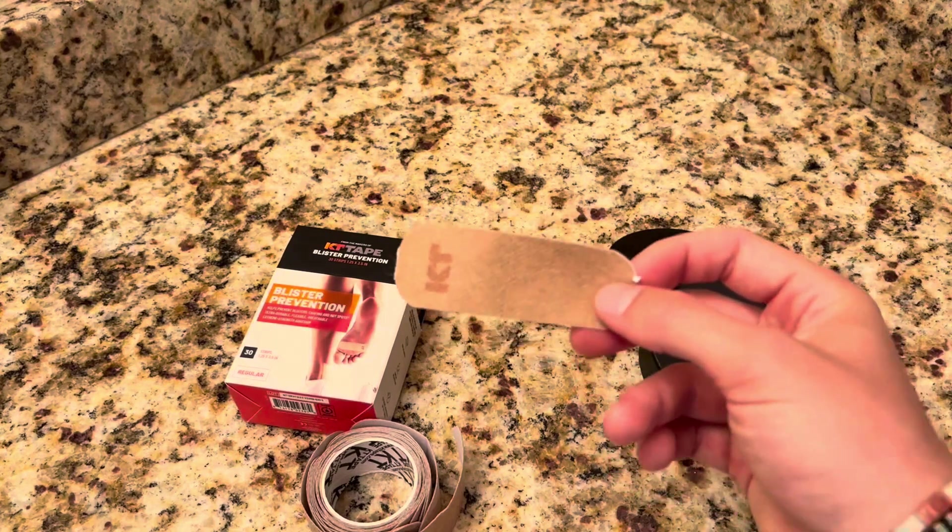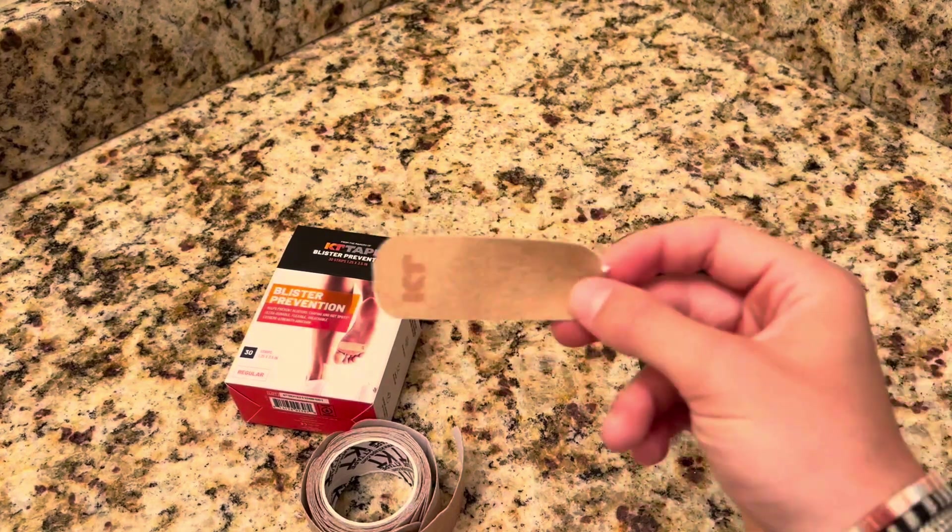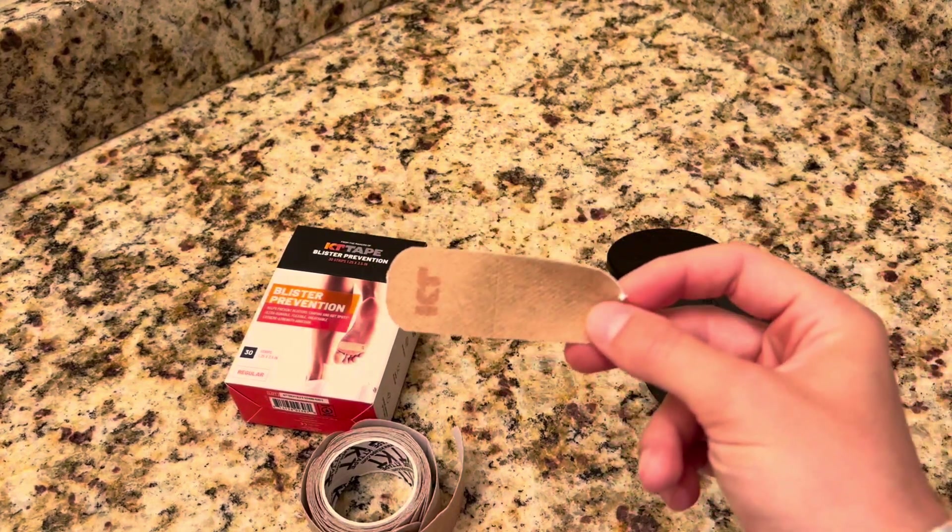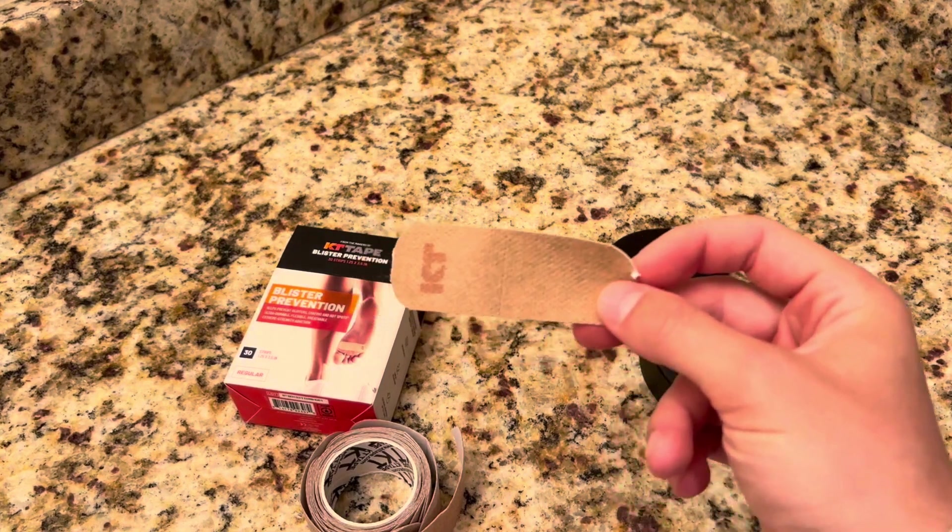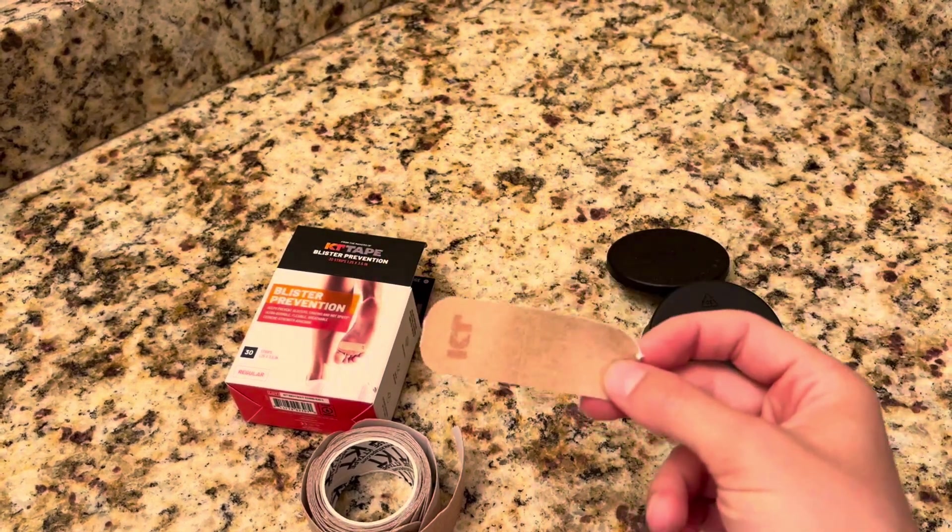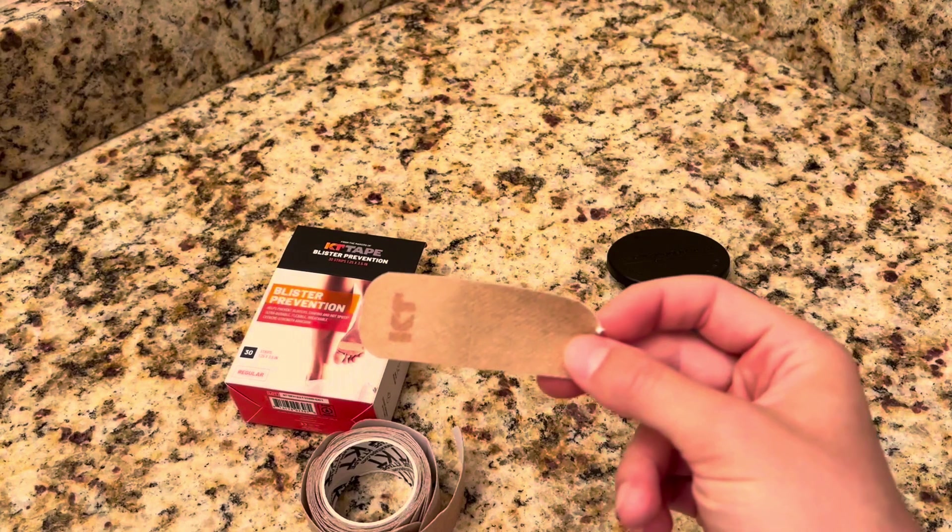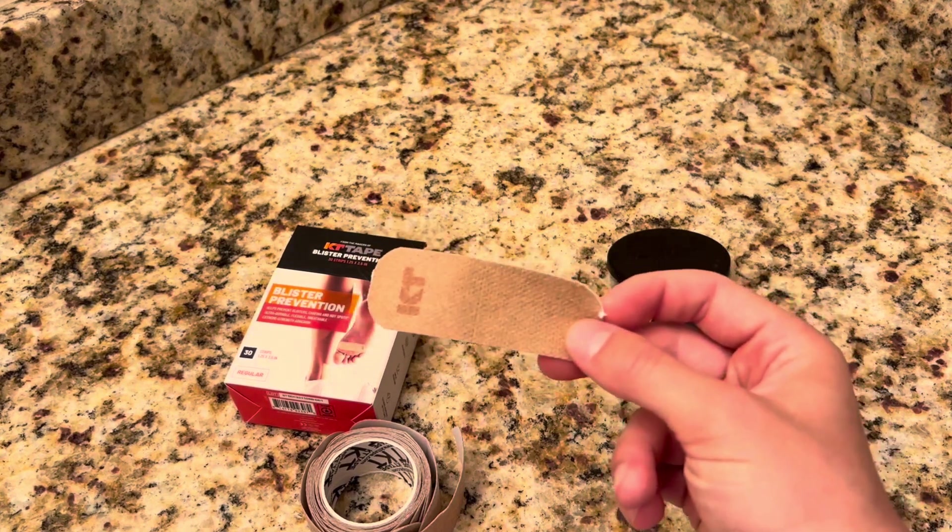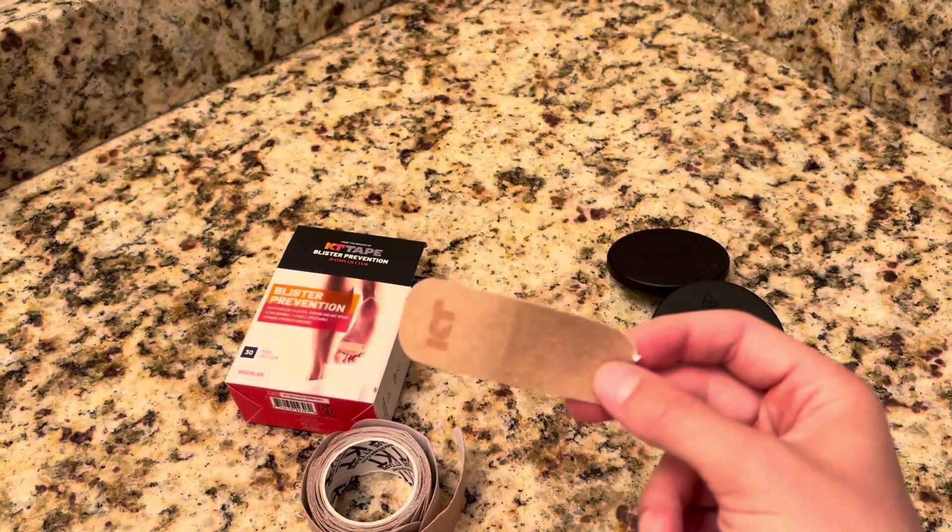What I would recommend is if you're getting a lot of rubbing, reapply. So if you can stop somewhere halfway through or whatever, just pop off one, put the new one on, clean the area off, dry it off. And then that should help you a ton in terms of preventing blisters.